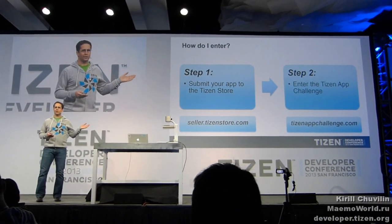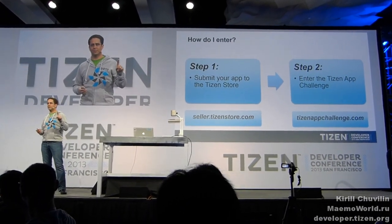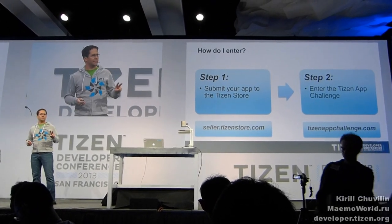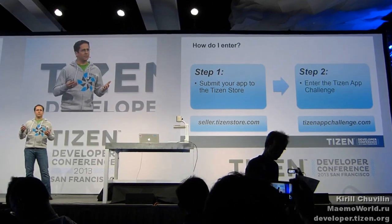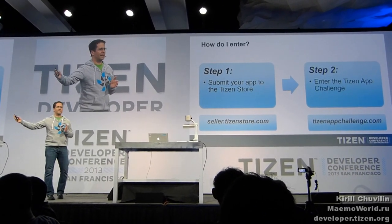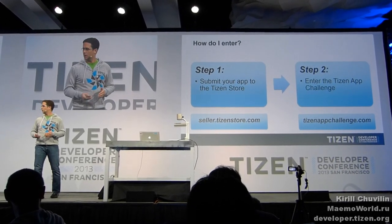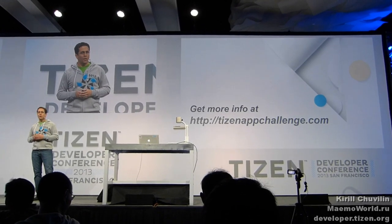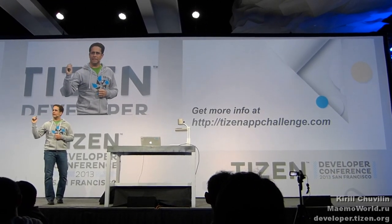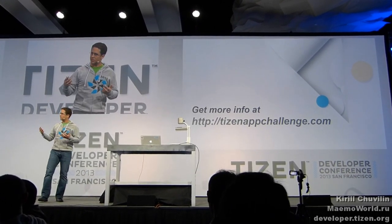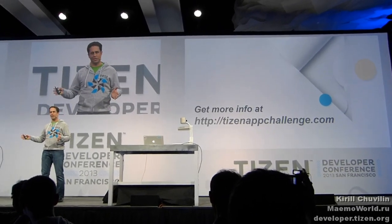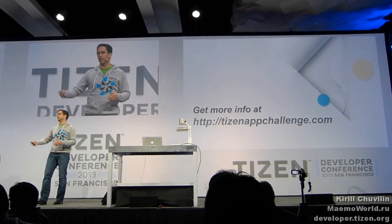So how do you enter? It's actually a two-stage process. Stage one: submit your app to the Ties of Store at Seller.TiesandStore.com. Stage two is to actually enter the Ties of App Challenge. Any apps that have been submitted to the Ties of Store since it opened — and through the end of the contest period — can be eligible. So even if you submit before the App Challenge begins on June 3rd, you're still eligible. There's a registration form on there right now — please register. Let us know what you're interested in developing, and we'll keep you posted on additional hackathons, port-a-thons, and other events.